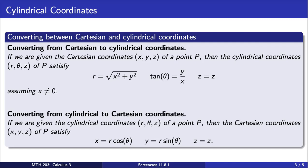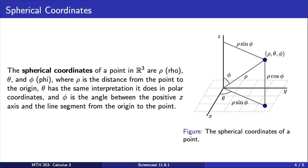Now let's turn our attention to spherical coordinates. The spherical coordinates of a point in R³ are (ρ, θ, φ), where ρ is the distance from the point to the origin. In this picture, this is given by the distance of this line right here.